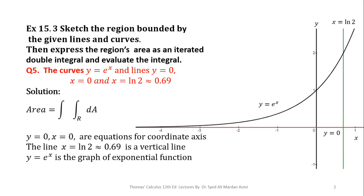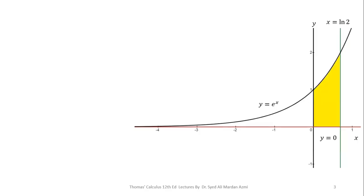Our boundary region is in the first quadrant because it involves all four boundaries. In the second quadrant, that portion is not our region of integration because it does not involve the boundary x = ln(2) — it only involves three boundaries. In the first quadrant, the closed region involves all four boundaries, so this is our region of integration.